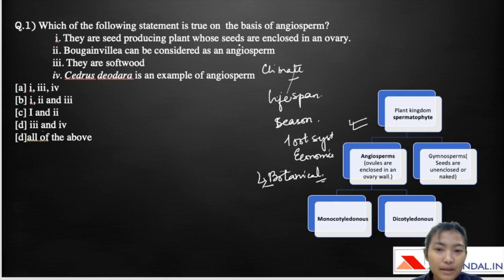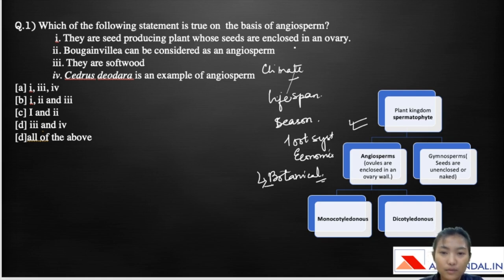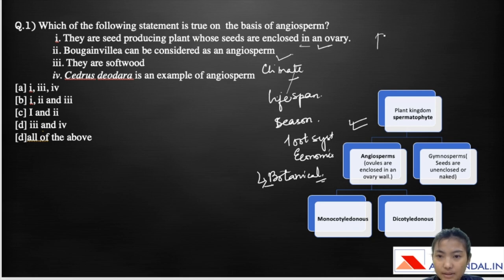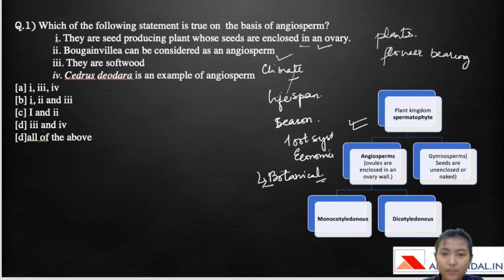Let's move on to the question again. There are seed-producing plants whose seeds are enclosed in an ovary — this is correct for angiosperms. Bougainvillea can be considered an angiosperm — this is correct, as angiosperms belong to flower-bearing plants. The statement that angiosperms are softwood is not correct, as angiosperms belong to hardwood.